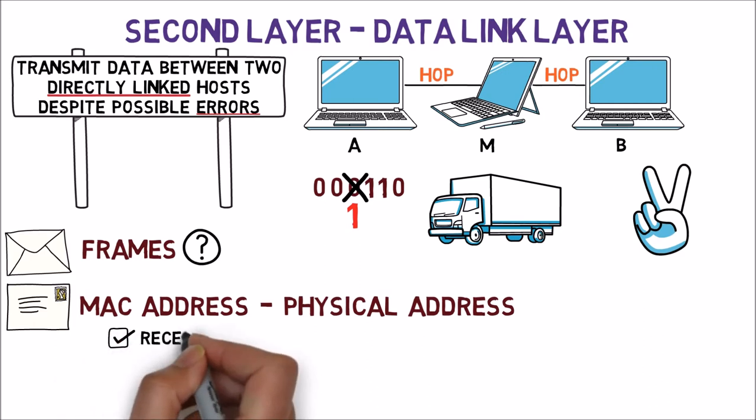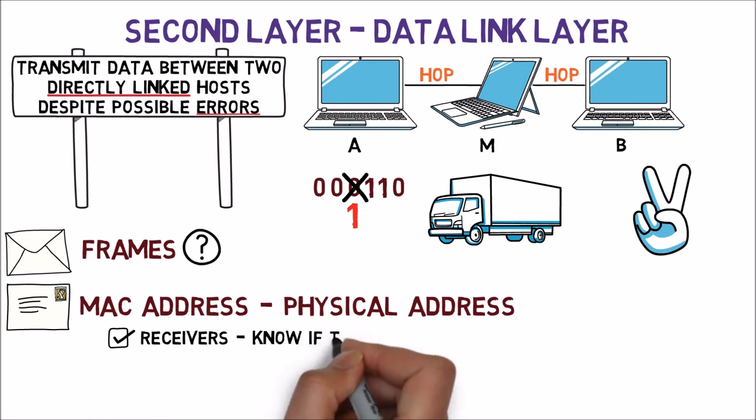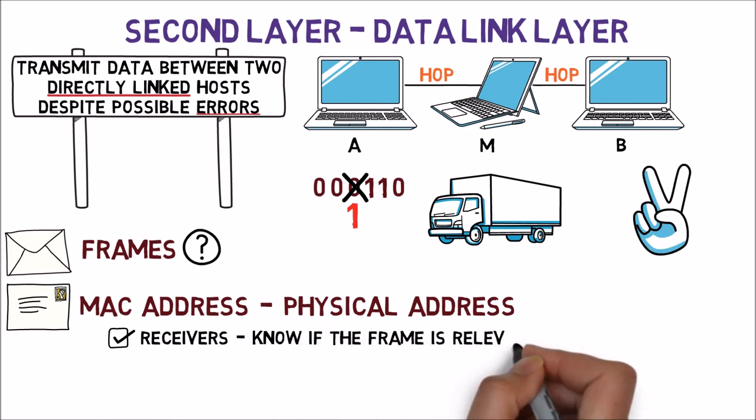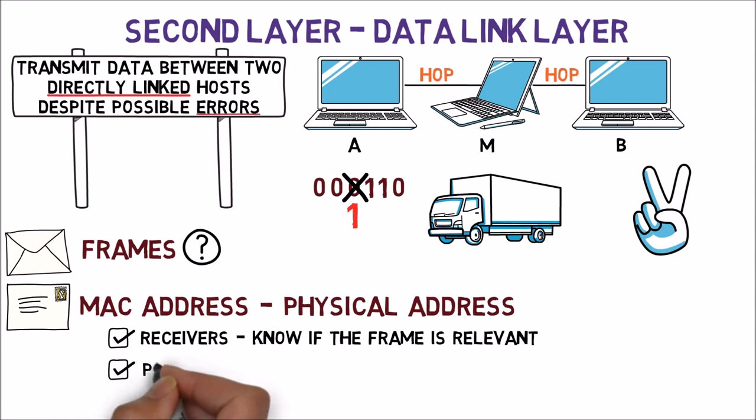First, as receivers, we'd like to know that the frame is intended for us. We wouldn't like to waste precious time reading data intended for someone else. If the frame contains a MAC address that doesn't belong to us, we can simply drop it. Second, for privacy reasons, we'd like messages to arrive only at intended receivers, so only they can read the data.